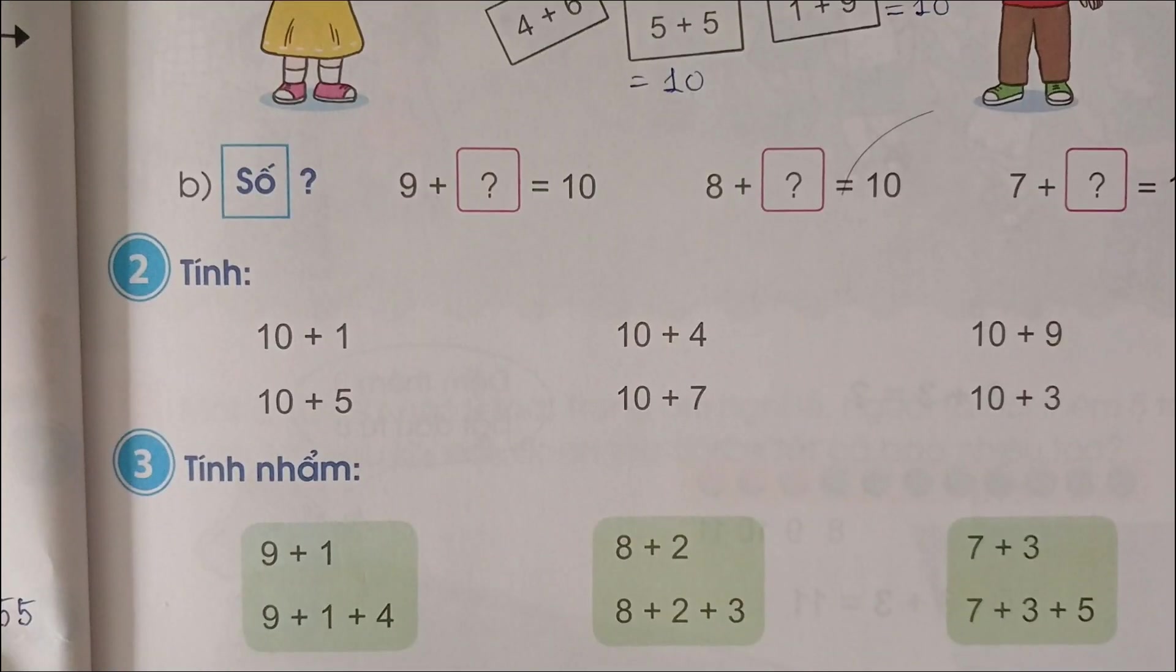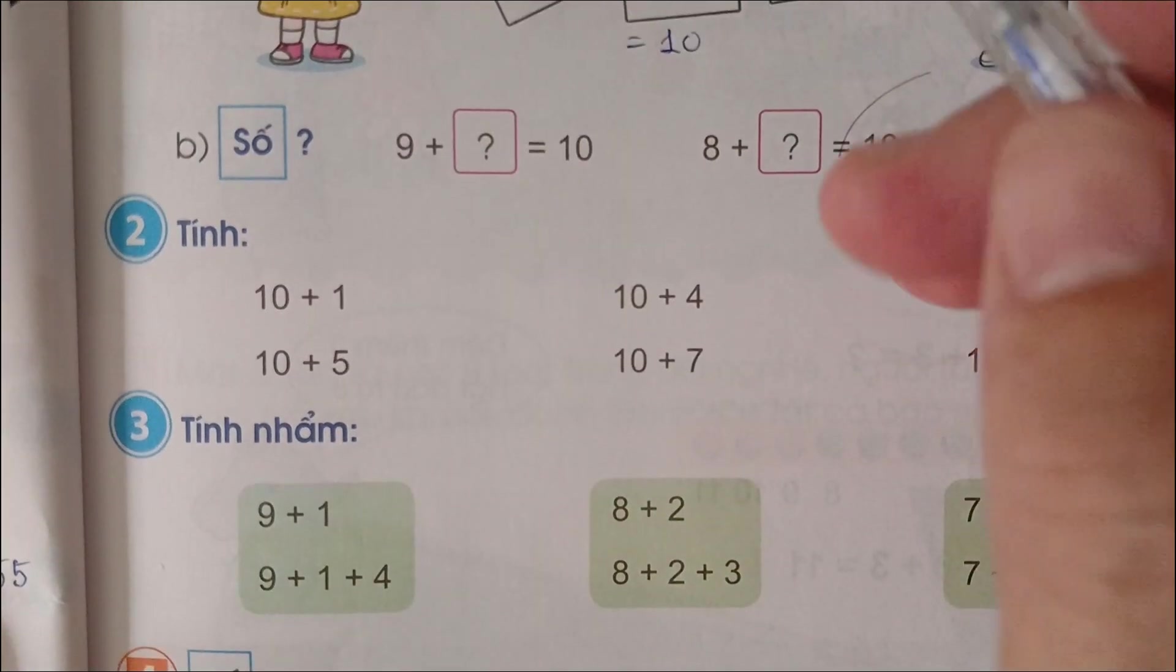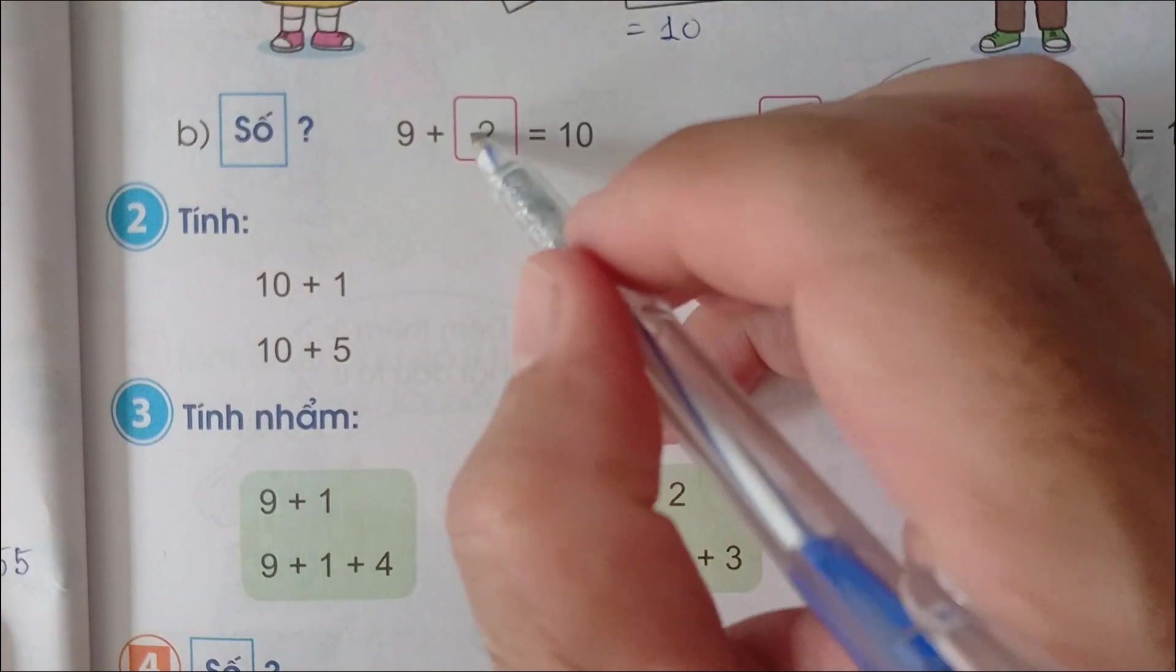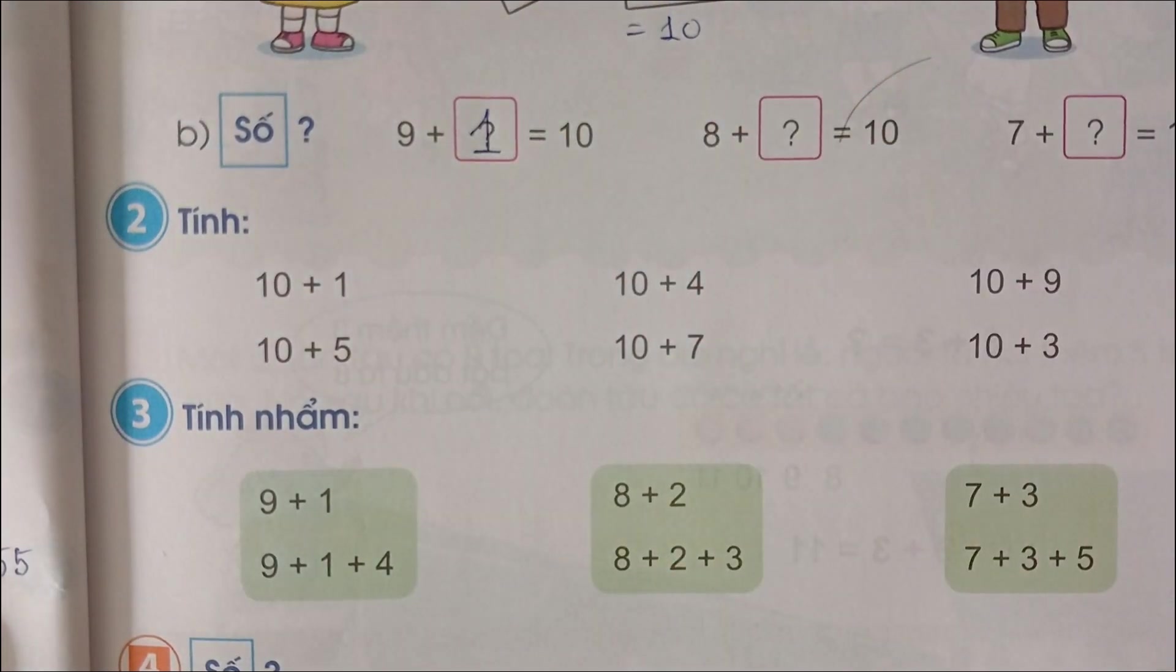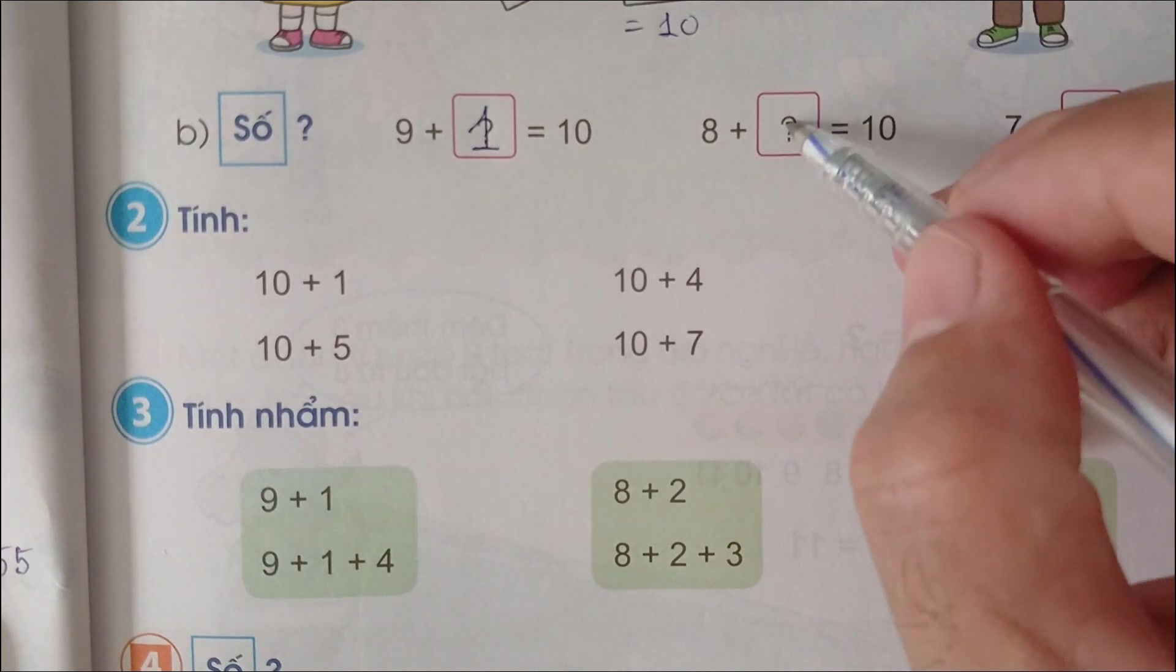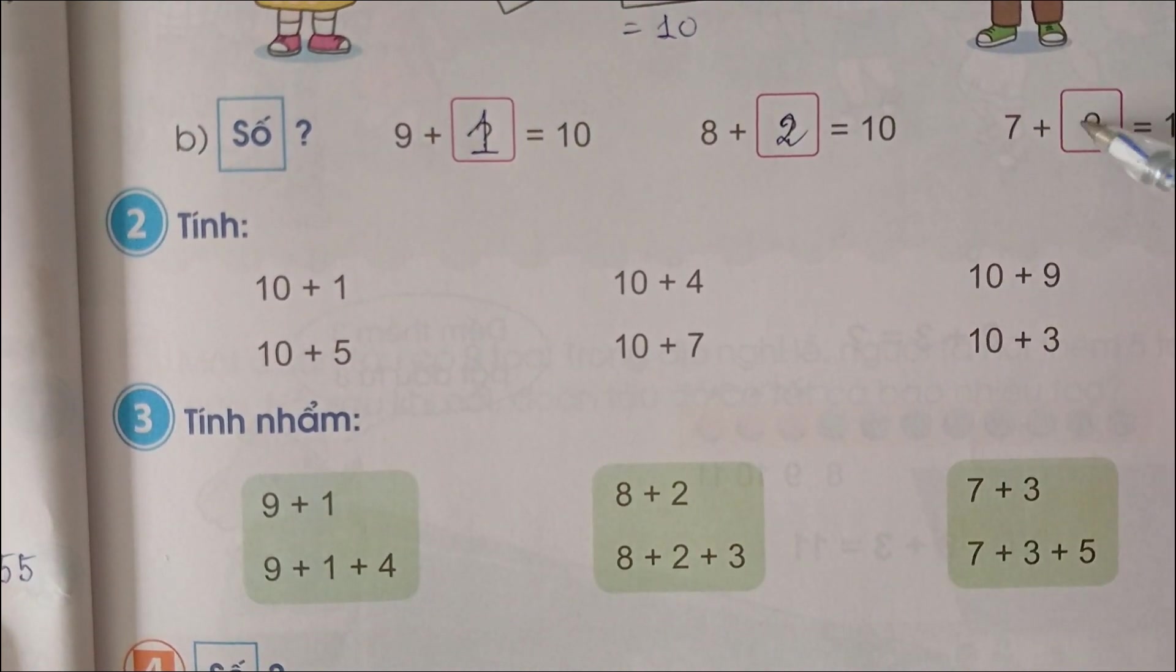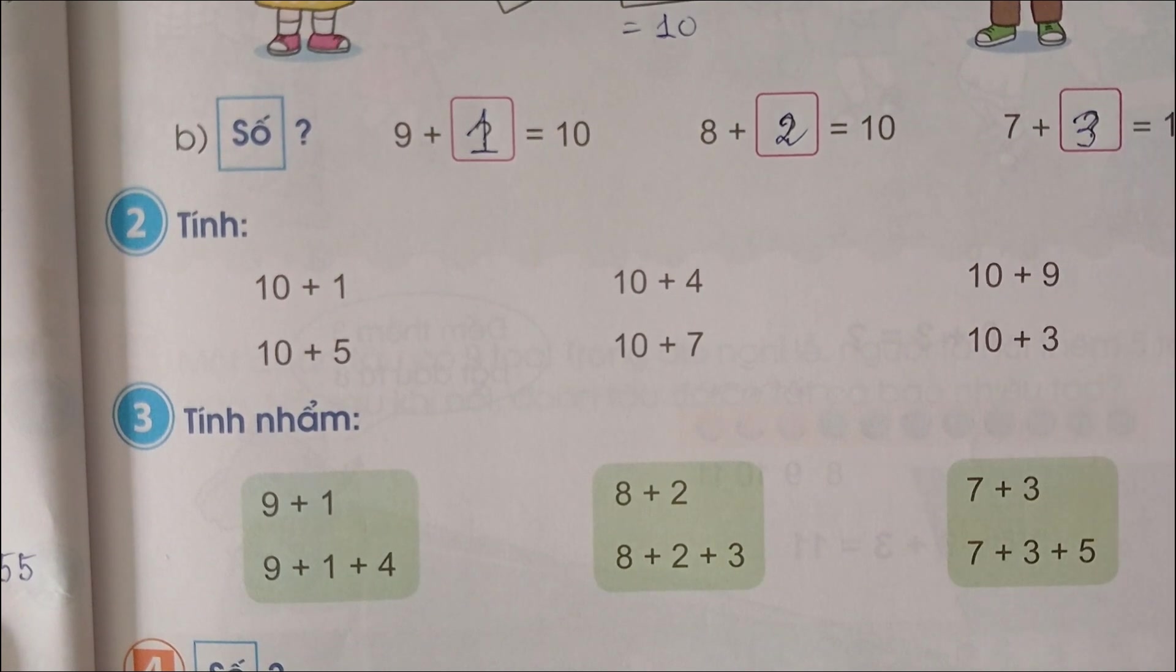Phần b, số còn thiếu: 9 cộng bao nhiêu bằng 10? 9 cộng 1 bằng 10. 8 cộng 2 bằng 10. 7 cộng 3 bằng 10.